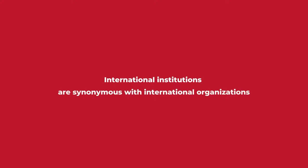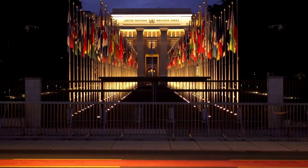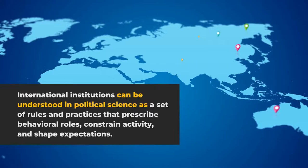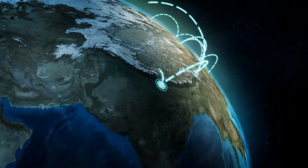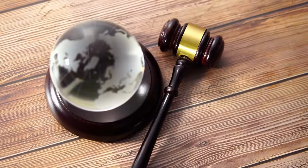International institutions are synonymous with international organizations. However, the word institution has a broader meaning than organization. International institutions can be understood in political science as a set of rules and practices that prescribe behavioral roles, constrain activity, and shape expectations. These rules are used in world politics such as international law and international norms. The term institutions can also be seen used as synonymous with regimes.